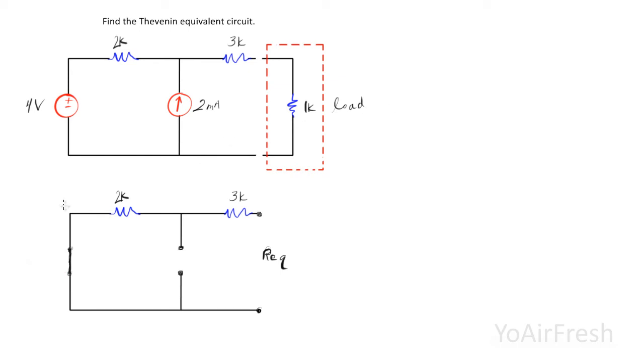Our next step is going to be finding the Thevenin voltage. To find the Thevenin voltage, we're just going to be using the voltage right across network A. So it's going to be at these terminals, and all we want to do is just break down this circuit.